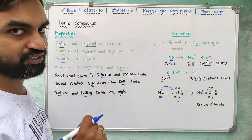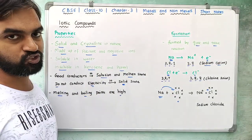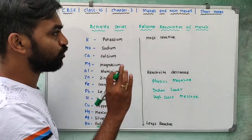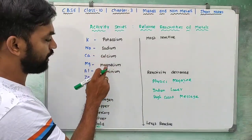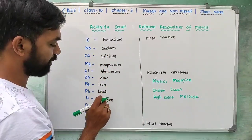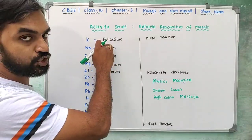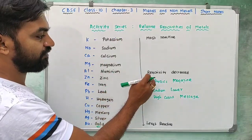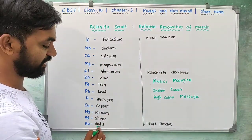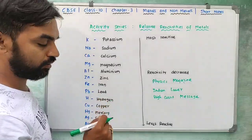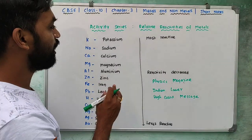Now the activity series — reactivity of metals in order from most to least reactive: potassium, sodium, calcium, magnesium, aluminum, zinc, iron, lead, hydrogen, copper, mercury, silver, gold. Gold is the least reactive.